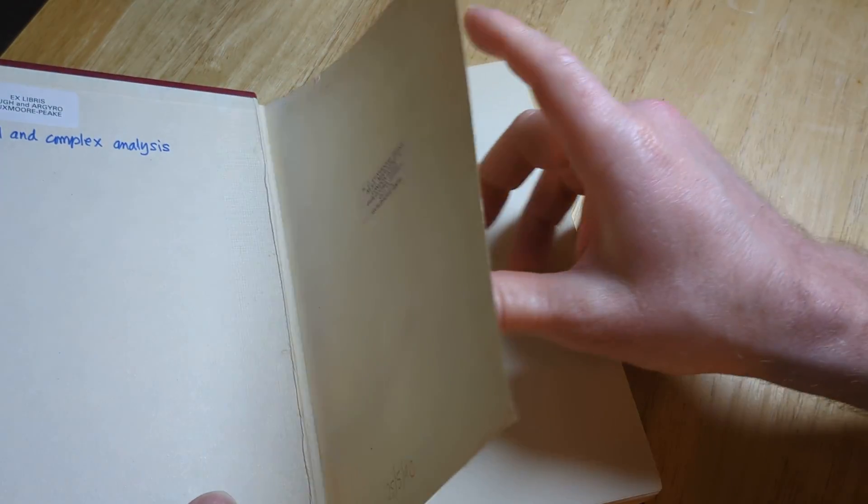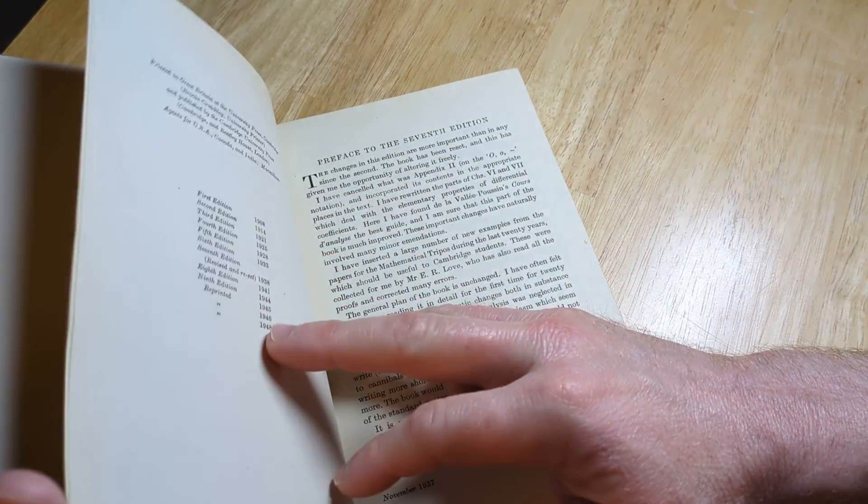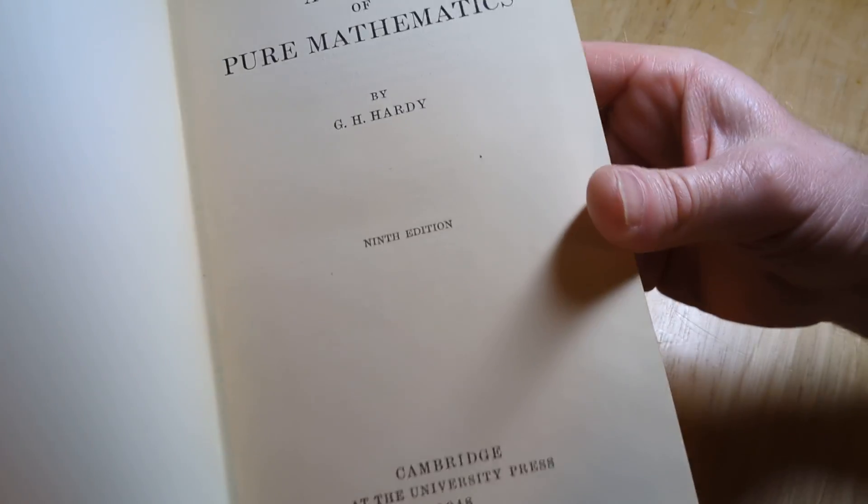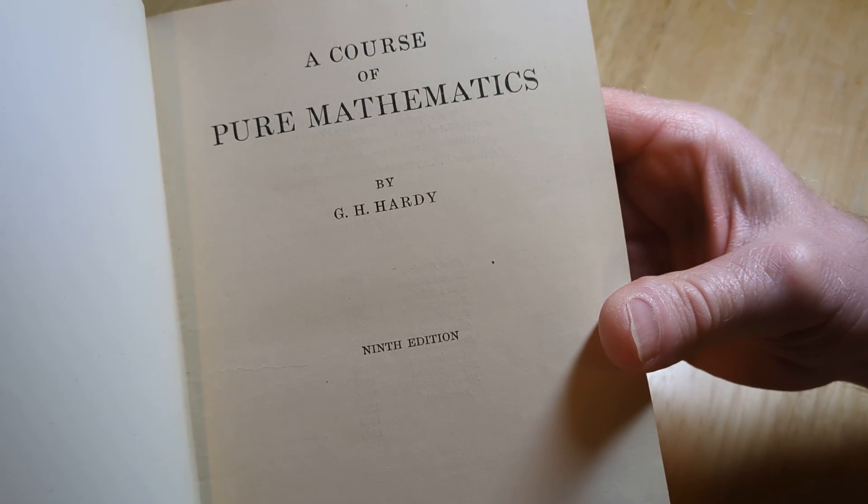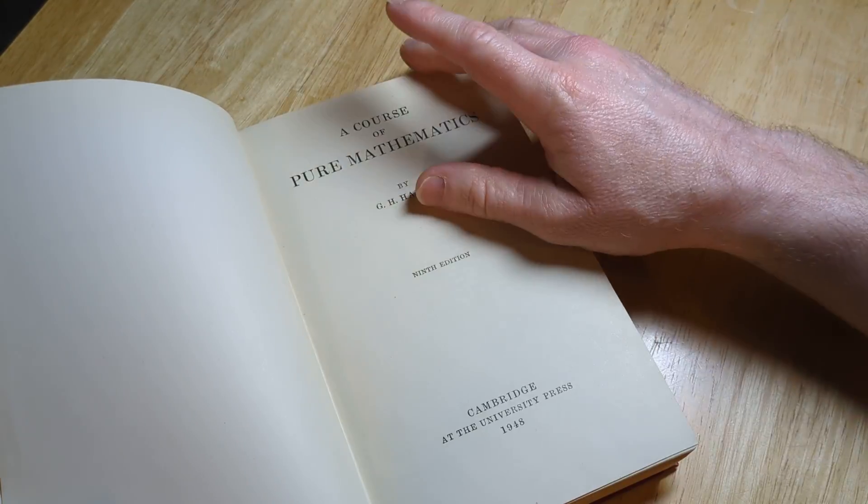This is a book called Pure Mathematics, A Course of Pure Mathematics, and it's written by G.H. Hardy. This is the same Hardy who invited Ramanujan to England. This is the same person who wrote this book.